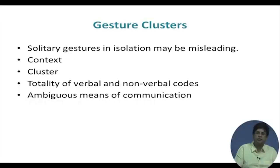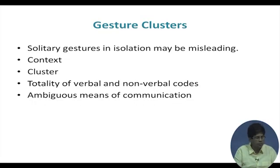A solitary gesture can be misleading — you need a context, a cluster of gestures, and the totality of verbal and nonverbal codes together to imply meaning. Ambiguity of meaning is very strong in nonverbal communication compared to verbalization, because words in most cases have clearer meanings. Nonverbal communication meanings are personally interpreted — we don't really have a systematic dictionary for nonverbal communication, and the rules are made and changed by everyone continuously.